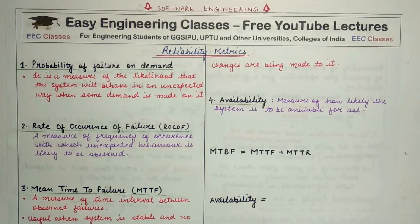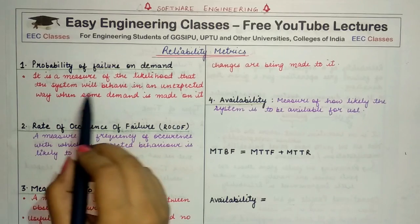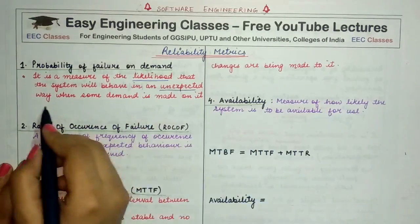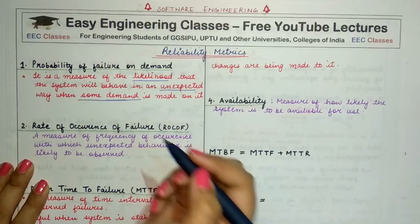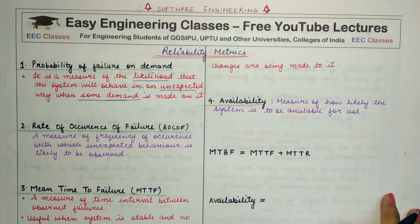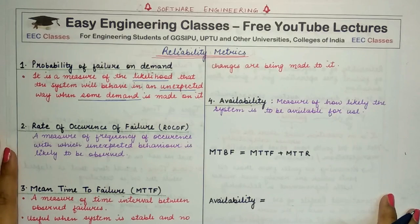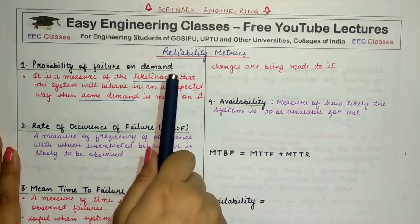The first metric is probability of failure on demand. This metric is a measure of the likelihood that the system will behave in an unexpected way when some demand is imposed on it. This means there is a probability that when a user's demand comes to the system to execute or perform a functionality, the system will behave unexpectedly or not correctly. We call it the probability of failure on demand.